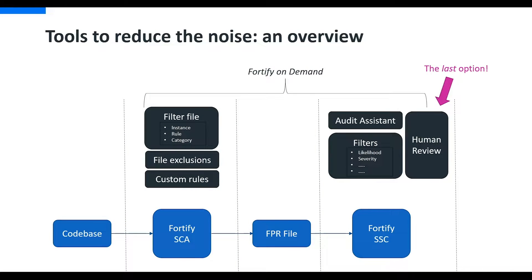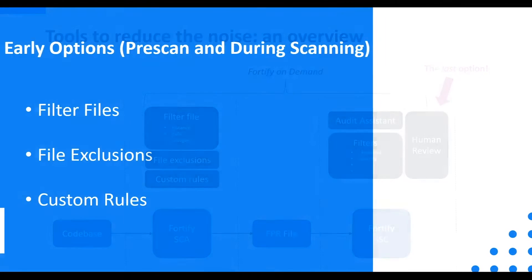So now we know what noise is - how do we fight it? This is an overview of the tools available and the flow when we scan. We start with a code base, run a static analysis, get a Fortify Project Result or FPR file, and that gets uploaded to Software Security Center. Organizations often use only human review and then state they have too much noise. There are steps you can take long before you get to human review to make things much easier. During scanning you have three options: filter files, file extension exclusions, and custom rules. Post scan in Software Security Center, you can use extensive filters as well as Audit Assistant. For Fortify on Demand customers, all of this can be completed behind the scenes, and customers can receive the human review performed by our team of experts as well.